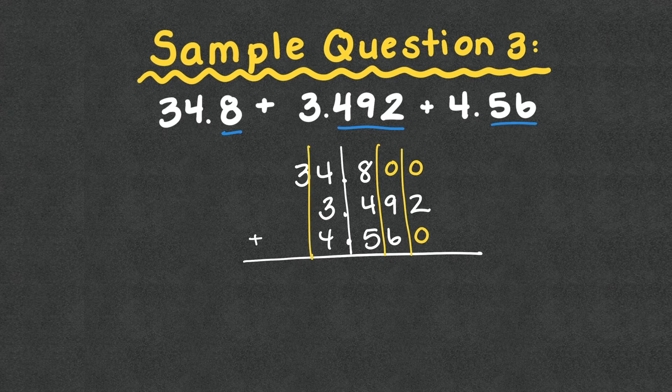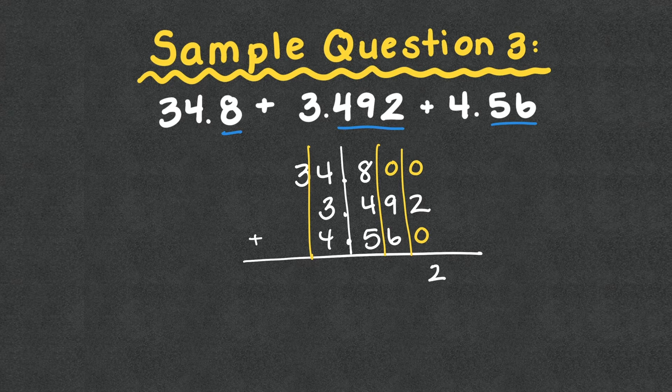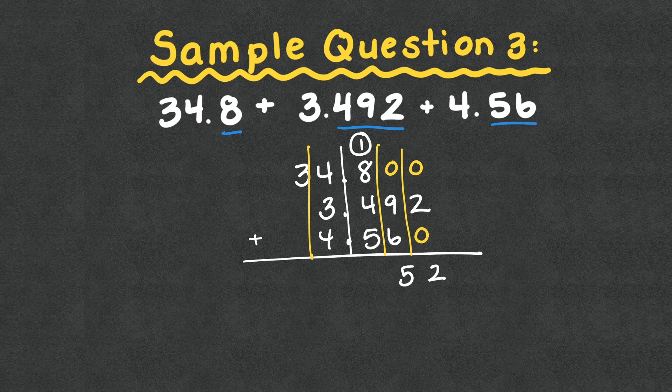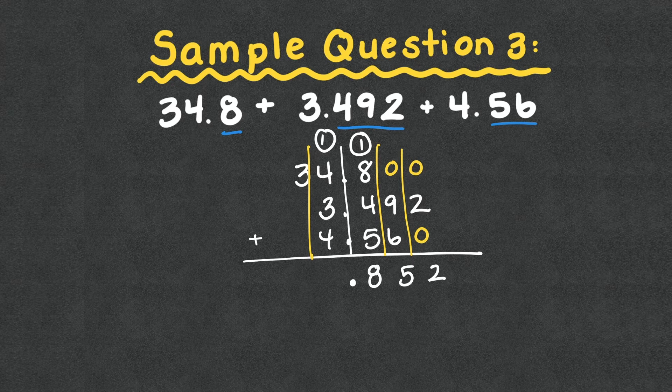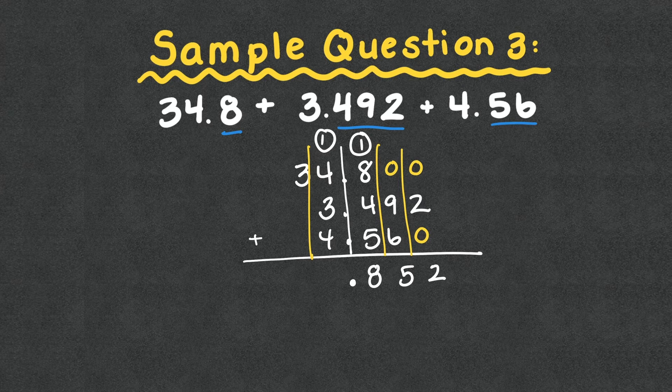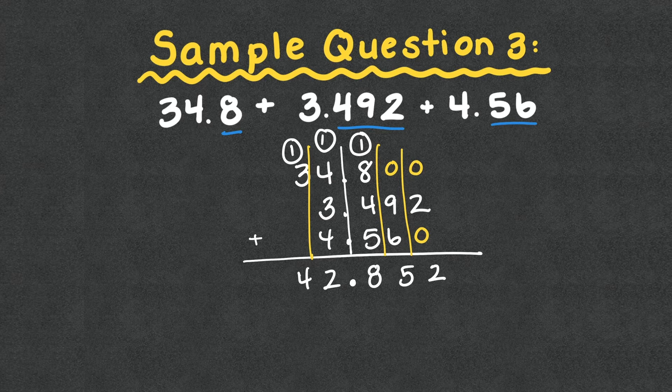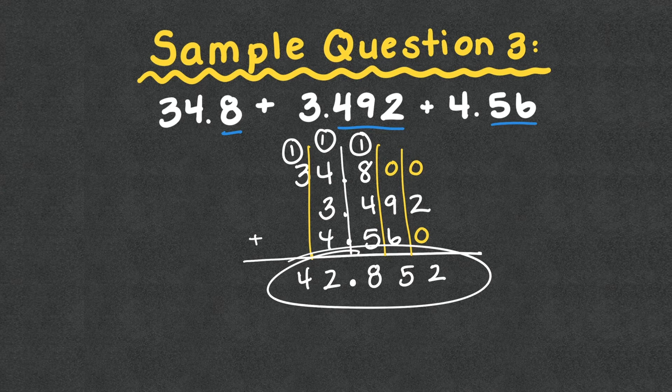So I'm going to add in some placeholder zeros just to make sure everything looks aligned. If it helps you to draw lines to see the alignment, that's also great too. Great strategy. So let me solve. 0 plus 2 plus 0, 2. 9 plus 6 is 15. Drop the 5. Carry the 1. 1 plus 8 is 9. Plus 4 is 13. Plus 5 is 18. I'm going to put down my decimal and remember to carry the 1. Don't worry. I did not forget that. Don't you either. And let's add these together. So 1 plus 4 is 5. Plus 3 is 8. Plus 4 is 12. Drop the 2. Carry the 1. 1 plus 3 is 4. So my answer then is 42 and 852 thousandths.